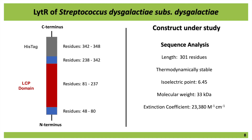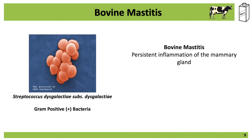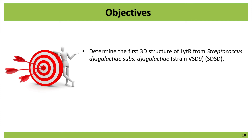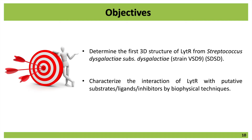Why am I studying the protein of this bacteria? Well, this bacteria is known to cause bovine mastitis, a disease characterized by the persistent inflammation of the mammary gland of cows. It's a highly impacting disease for the dairy industry, as it might be potentially fatal for the cows and might contaminate the milk with bacteria or toxins released by the bacteria during infection, rendering the milk unusable for human consumption. My main objectives are the determination of the first three-dimensional structure of the LCP protein of this organism, and then characterizing the interaction of the protein with putative lipids.